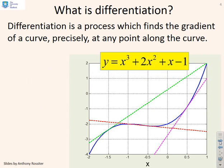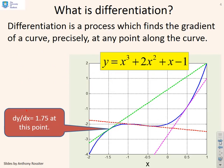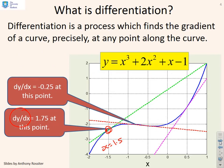What is differentiation then? Differentiation is a process which finds the gradient of a curve precisely at any point along the curve. So we could find that dy/dx is 1.75 at x equals 1.5, or dy/dx is minus 0.25 at the point x equals minus 0.5, and so on.